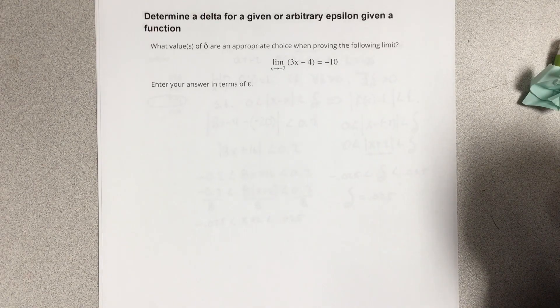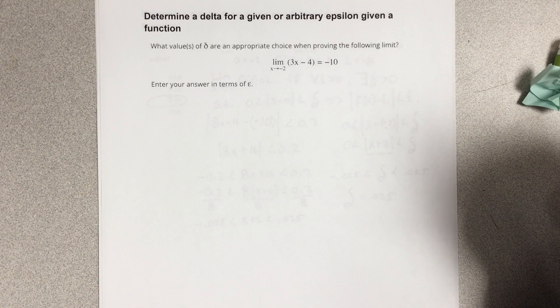In this video we're going to determine a delta for a given or arbitrary epsilon given a function. This is what values of delta are an appropriate choice when proving the following limit.